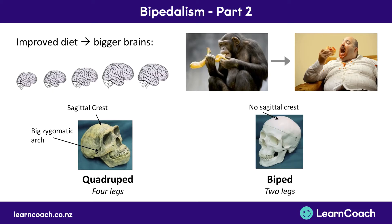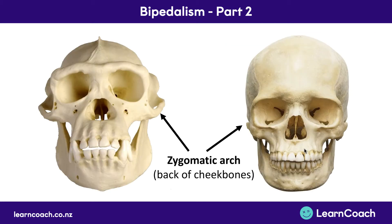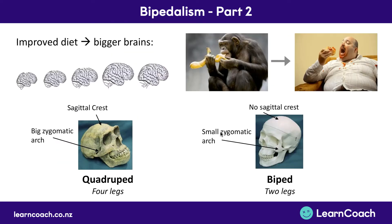The second change is what's called big zygomatic arches. These are the arches that come out behind your cheekbones. They're bigger back when we were quadrupeds and they're smaller now. On quadrupeds they stick out quite a lot, whereas on humans they barely stick out at all behind the cheekbones. So we have smaller zygomatic arches now.